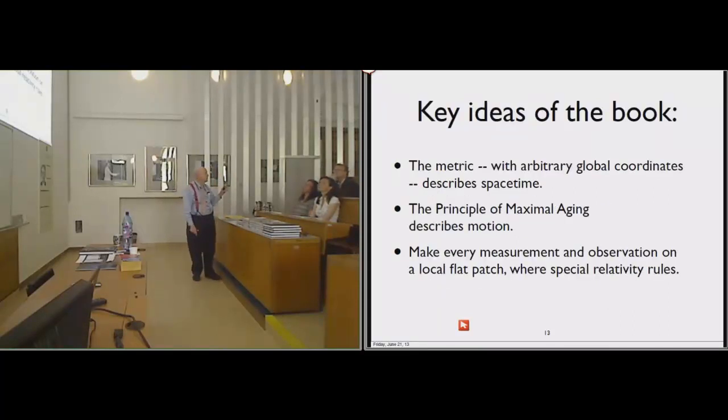The event horizon is nothing weird. It takes light to move slower and slower, the closer you get to a black hole. At some point the light speed is so slow that nothing can get away. The event horizon is just that point. So there's only three key ideas of the book. The first is the metric with an arbitrary global coordinate. You choose them, it's up to you, almost arbitrary. That describes spacetime. The principle of maximal aging describes motion.